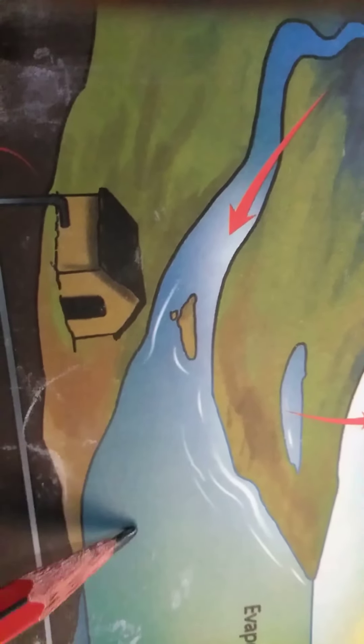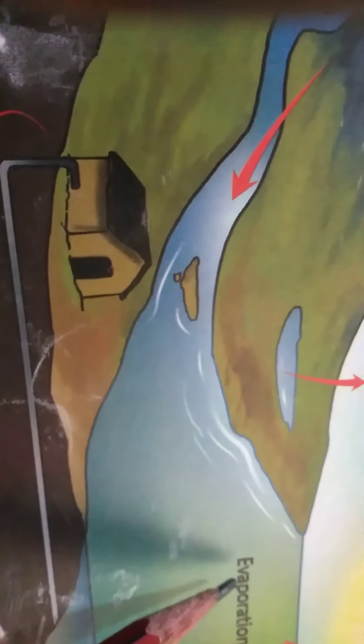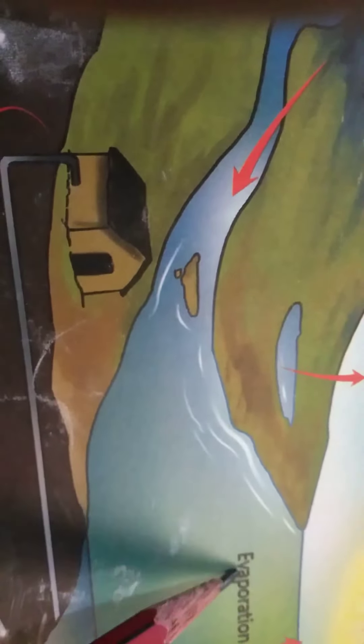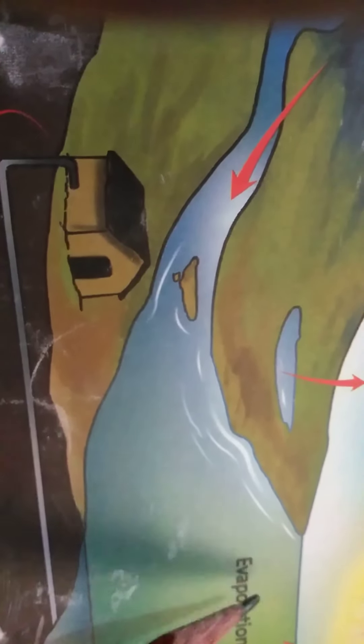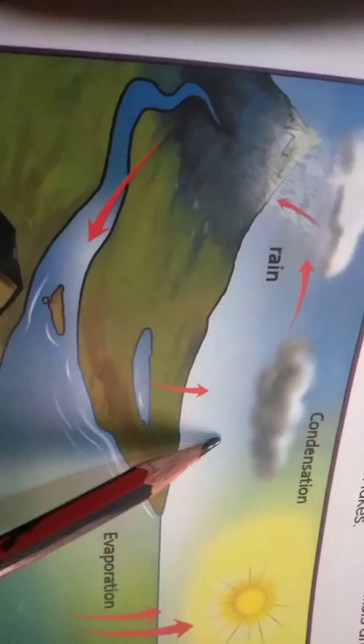During summer it is very hot, and a large quantity of water evaporates from the sea. It evaporates from seas, lakes, and rivers. This evaporation converts the water into water vapor.